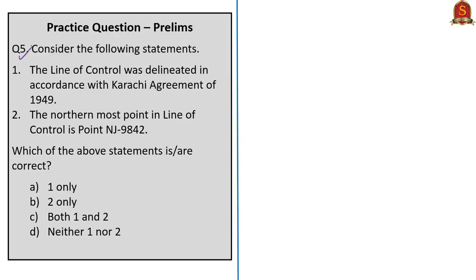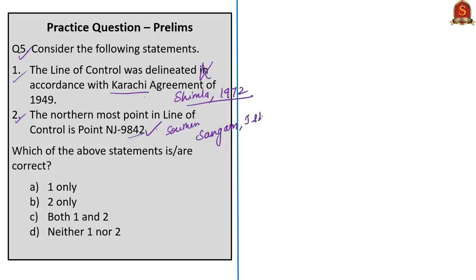Next question: consider the following statements. Statement one: the Line of Control was delineated in accordance with the Karachi Agreement of 1949. Statement two: the northernmost point in the Line of Control is point NJ9842. Statement one is wrong — it was delineated in accordance with the Shimla Agreement signed in 1972. The Karachi Agreement of 1949 was between military representatives of India and Pakistan regarding the ceasefire line in Jammu and Kashmir. Statement two is factually correct — NJ9842 is the northernmost point and Sangam is the southernmost. The correct option is B: two only.